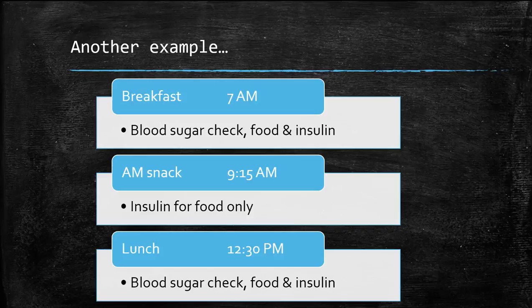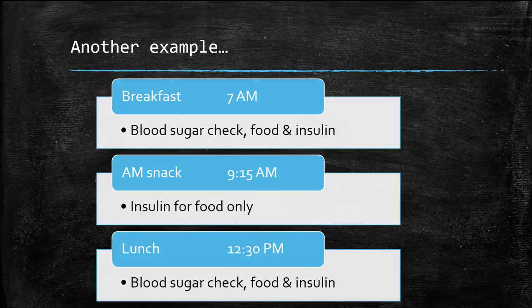If you had breakfast at 7, you would check your blood sugar, give insulin if needed to correct, and give insulin for food. There is a classroom snack at 9:15. You will only give insulin for the carbs you are going to eat. If you check your blood sugar, it will look high, but that is not a true high.